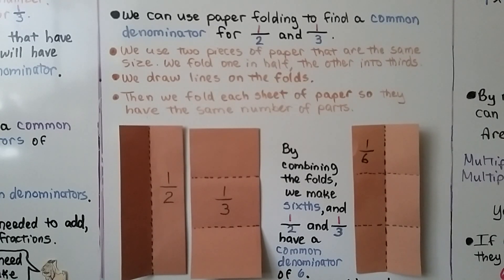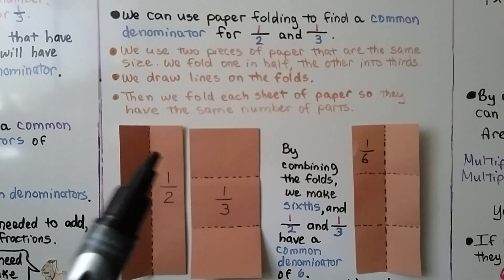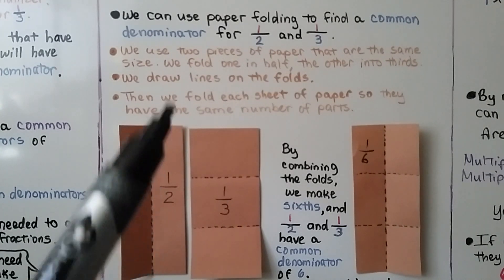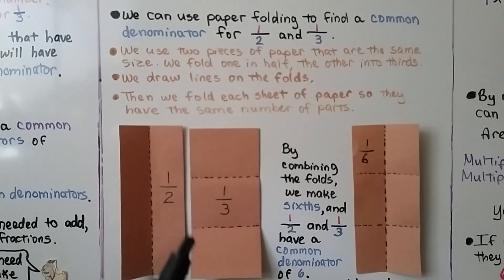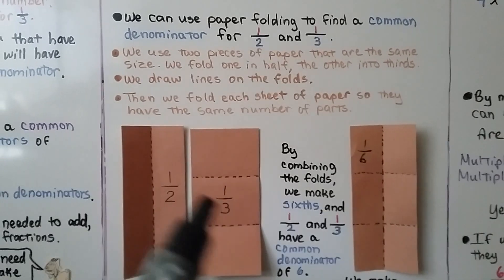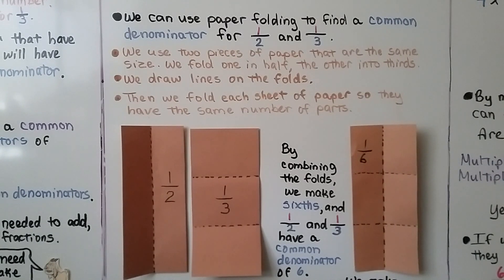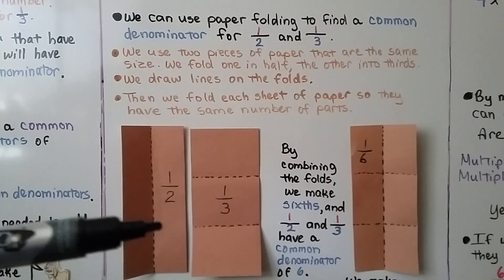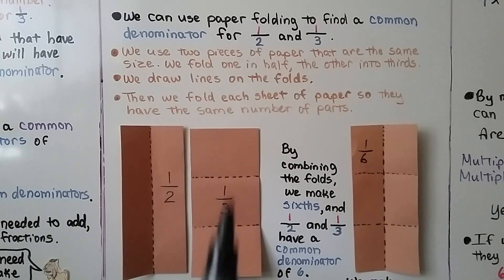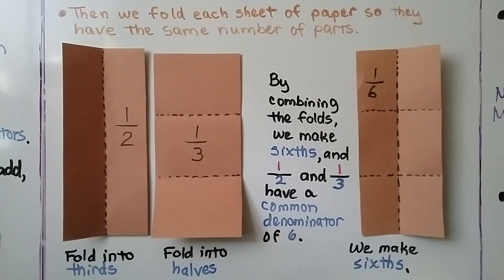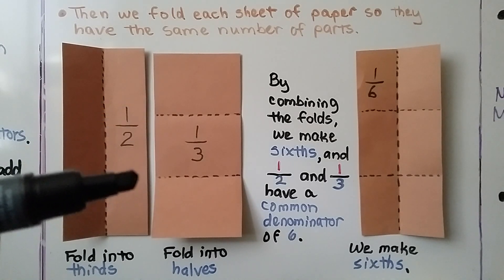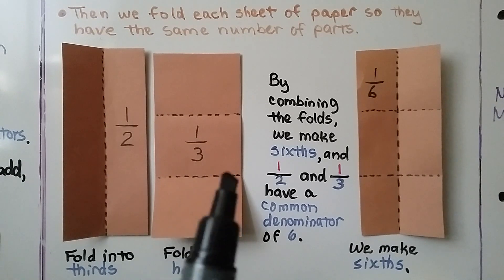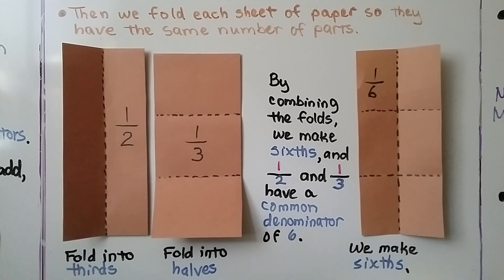We can use paper folding to find a common denominator for one-half and one-third. We use two pieces of paper that are the same size. We fold one in half vertically and the other into thirds, then draw lines on the fold. Then we fold each paper so they have the same number of parts — we take the one folded in half and fold it into thirds, and take the one folded in thirds and fold it in half. By combining the folds, we make sixths. So one-half and one-third have a common denominator of six.